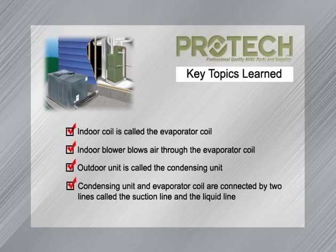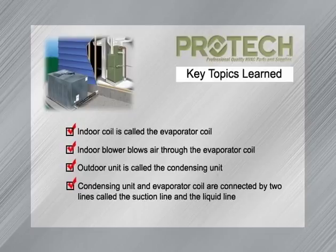The outdoor unit and indoor unit are connected by refrigerant tubing. Heat is carried from the indoor coil to the outdoor coil in a special line called the suction line. The refrigerant is returned to the indoor coil in a special line called a liquid line. Both the liquid line and suction line make up an assembly commonly called a line set.